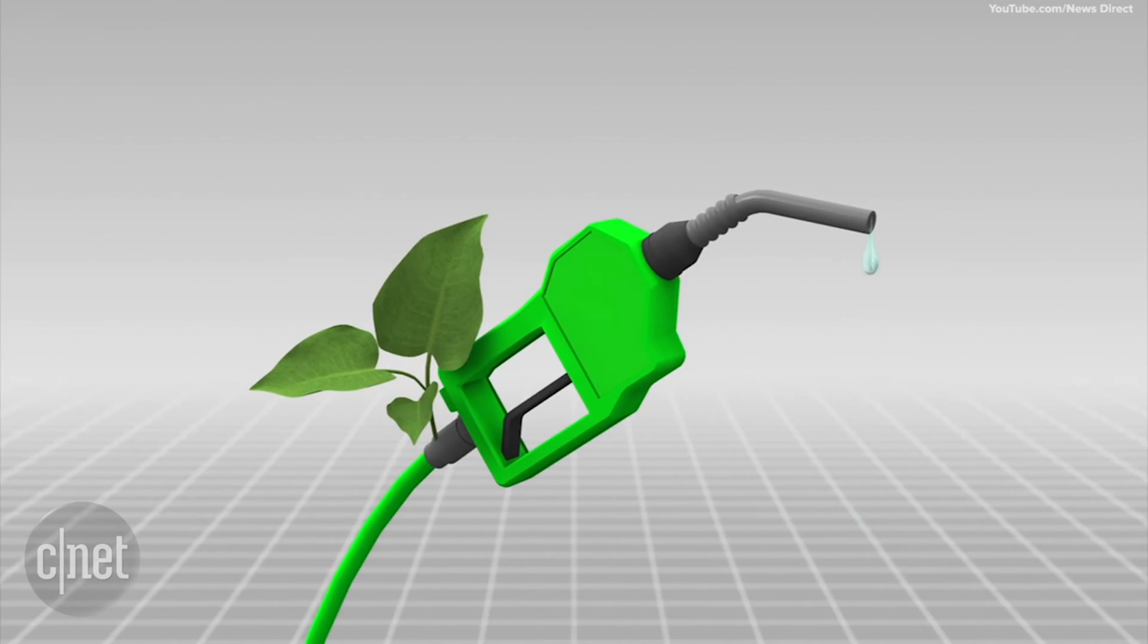This means you can produce your own fuel in your own home if you have a bionic leaf, sunlight, and water.